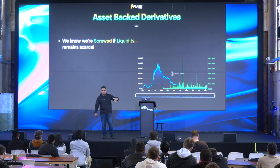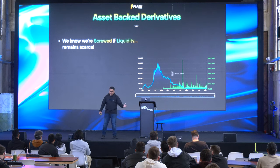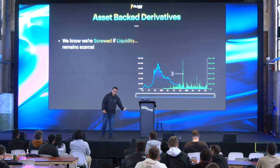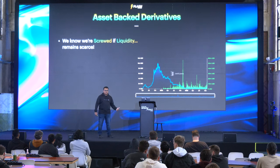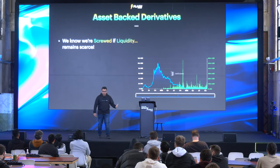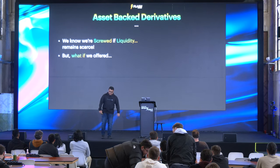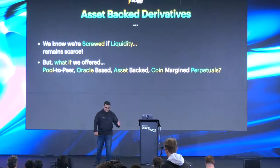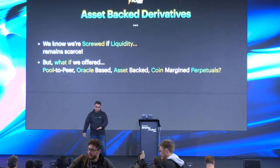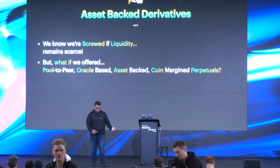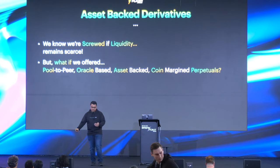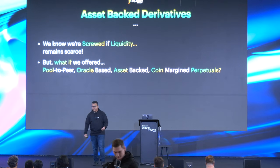It wasn't because of one particular entity — it was us offering our best, and we need to get back at it. We've spent so much time in the trenches, so why can't we reclaim the glory we once had? That could change if we offered pool-to-peer, oracle-based, asset-backed coin margin perpetuals. What is a pool-to-peer, oracle-based, asset-backed coin margin perpetual? I'll answer that in a short while.